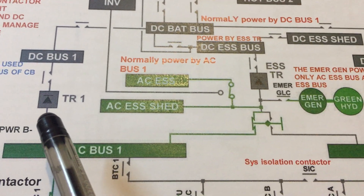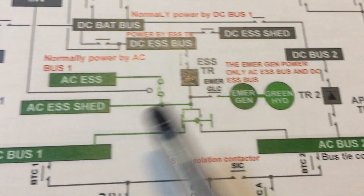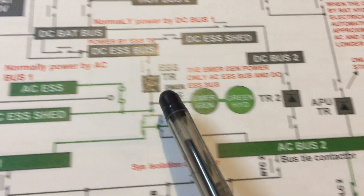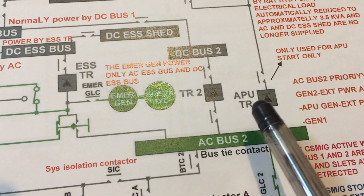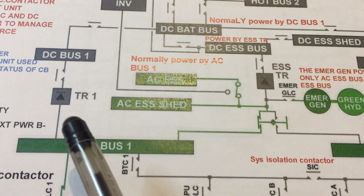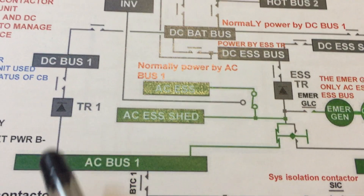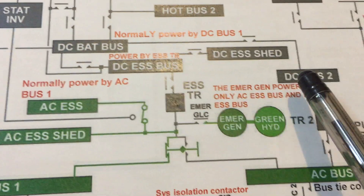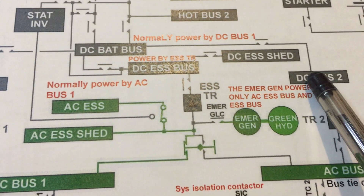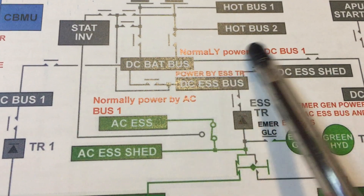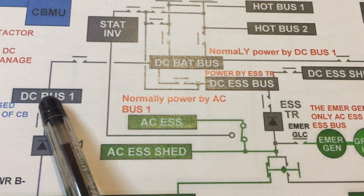We have four TRs in the A330: TR number one, TR number two, essential TR, and APU TR. The TR converts AC to DC power. From the TR, AC power is converted to DC power, giving us DC bus number one and DC bus number two.